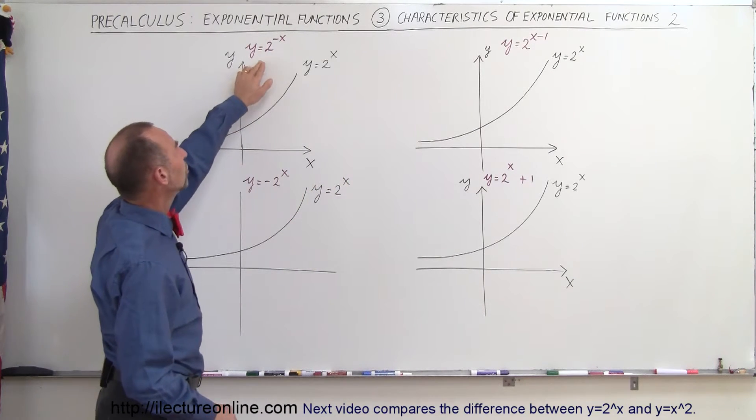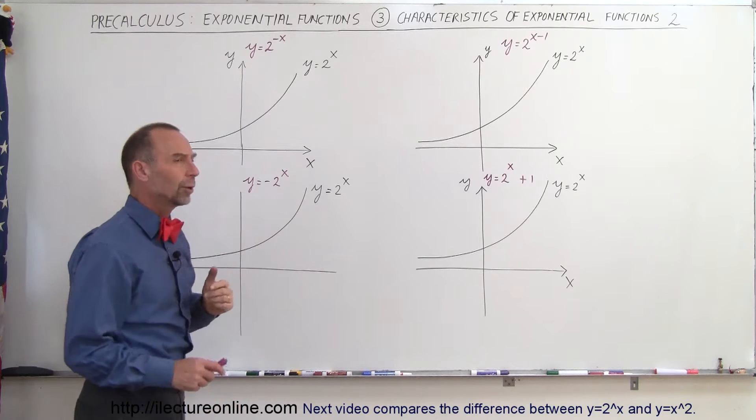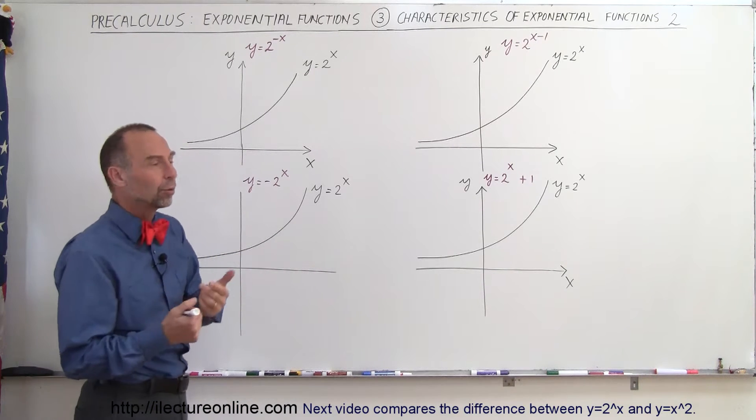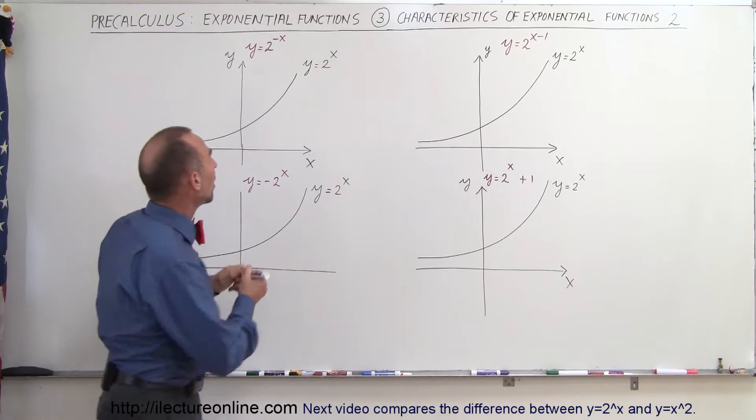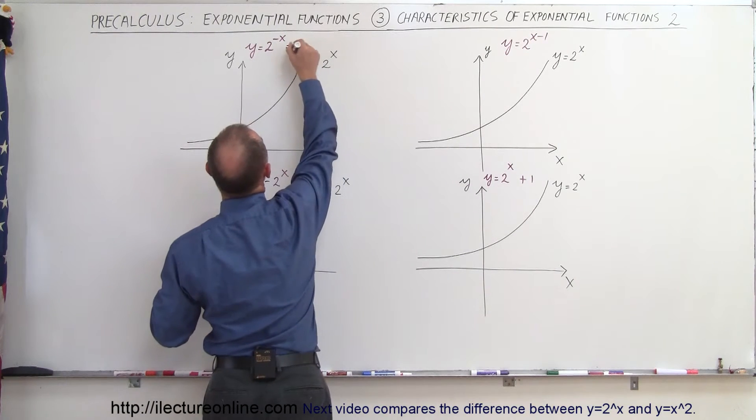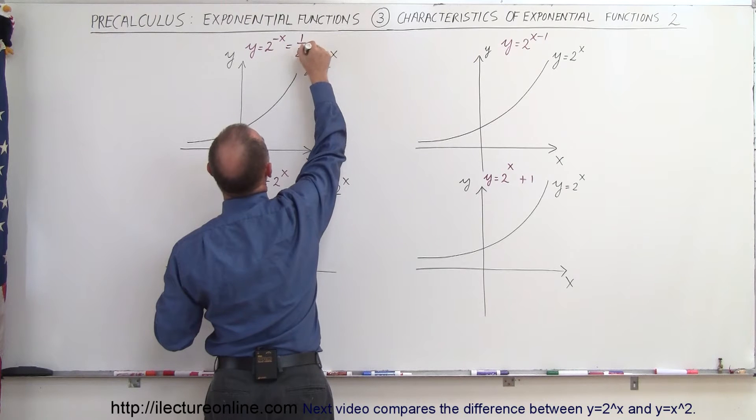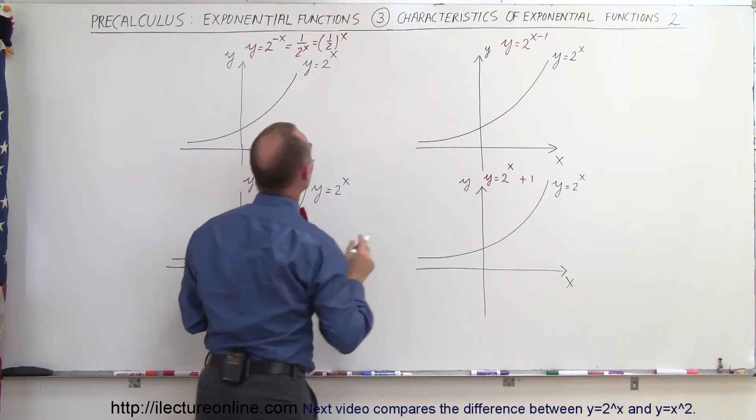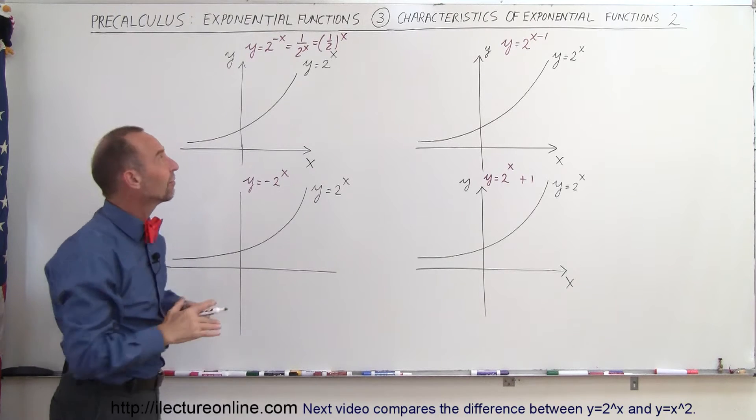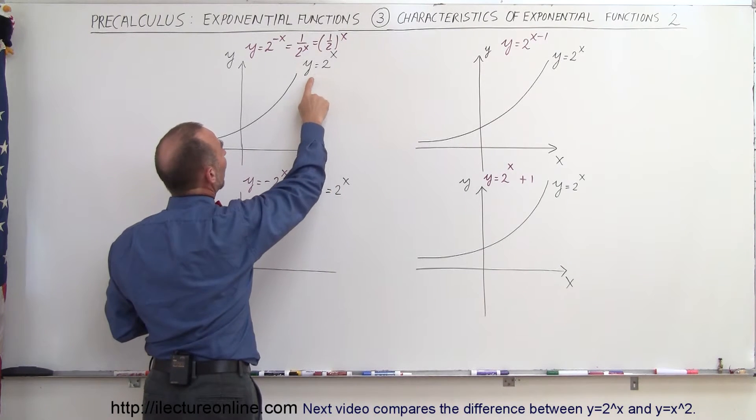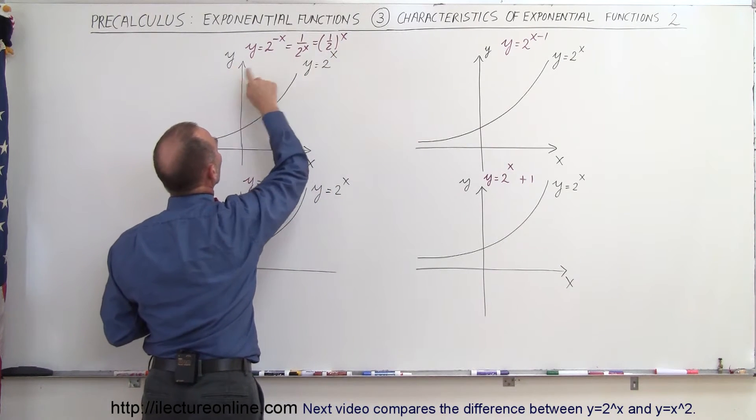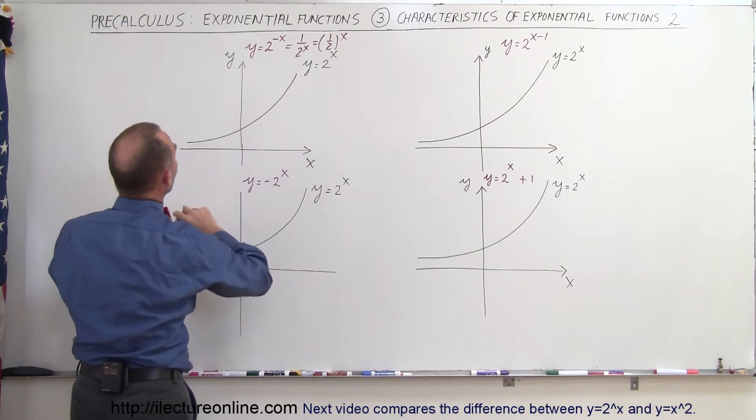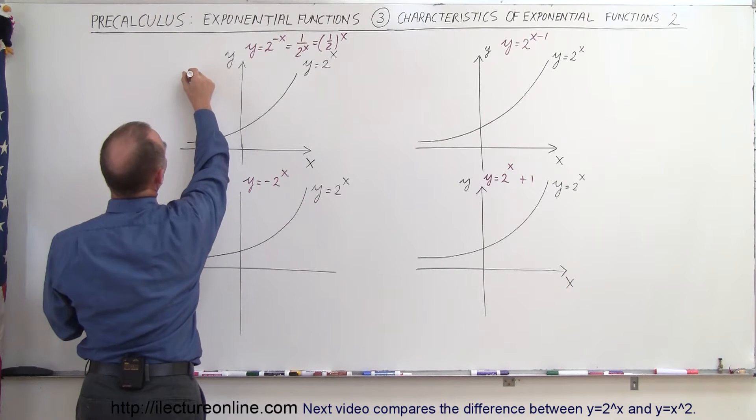First of all, y equals 2 to the negative x power. Well what does that mean? We can change it into positive exponents by bringing the 2 into the denominator, which is equal to 1 half to the x power. And then we realize, just like we saw in the previous video, that when we compare y equals 2 to the x to y equals 1 half to the x, it basically gives you the mirror image about the y-axis, so that function will look like this.